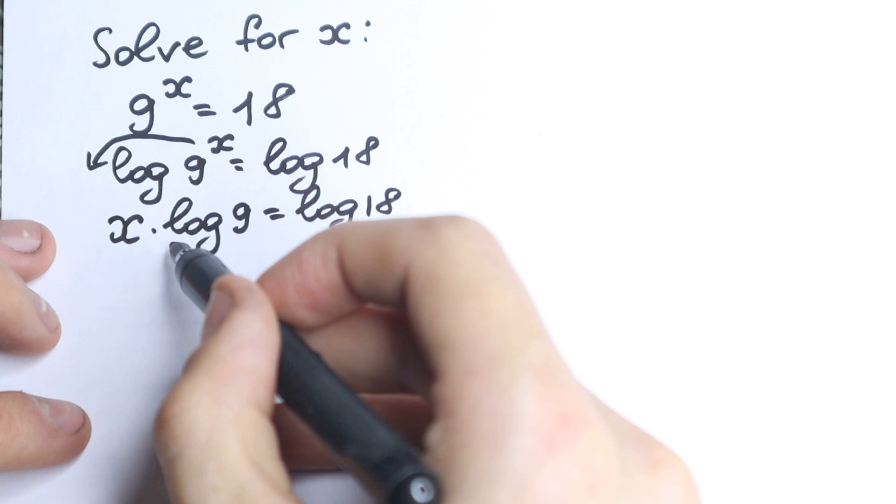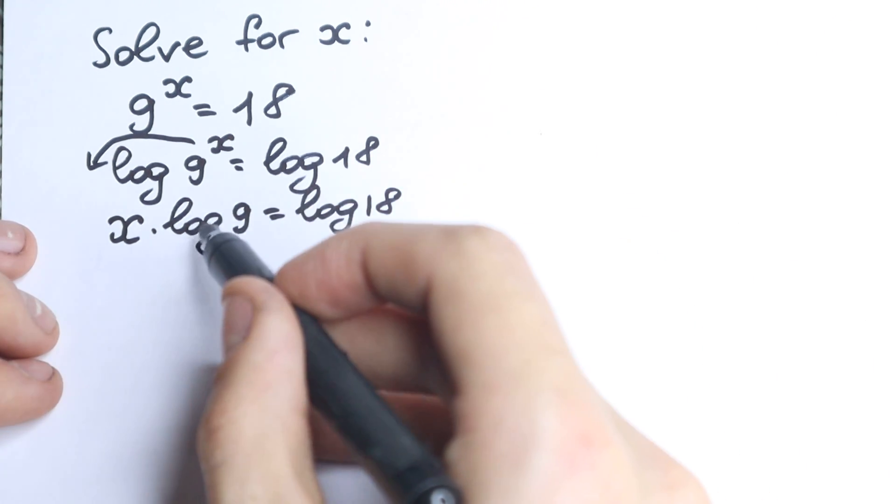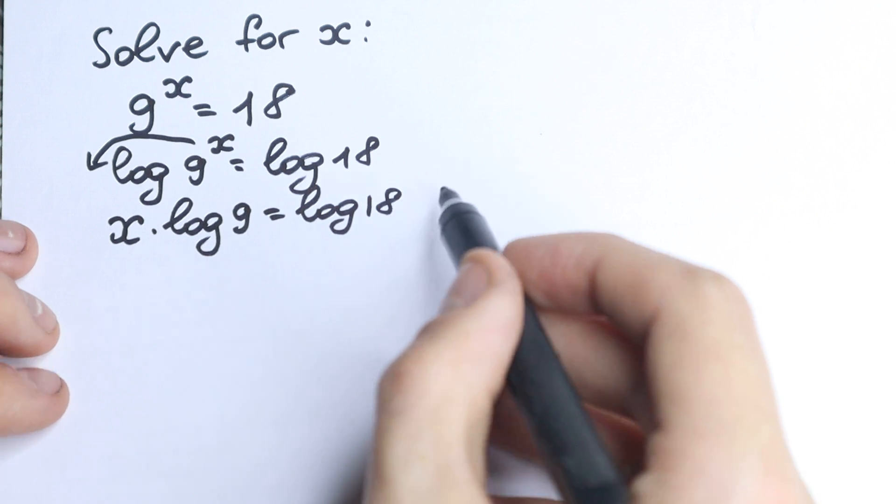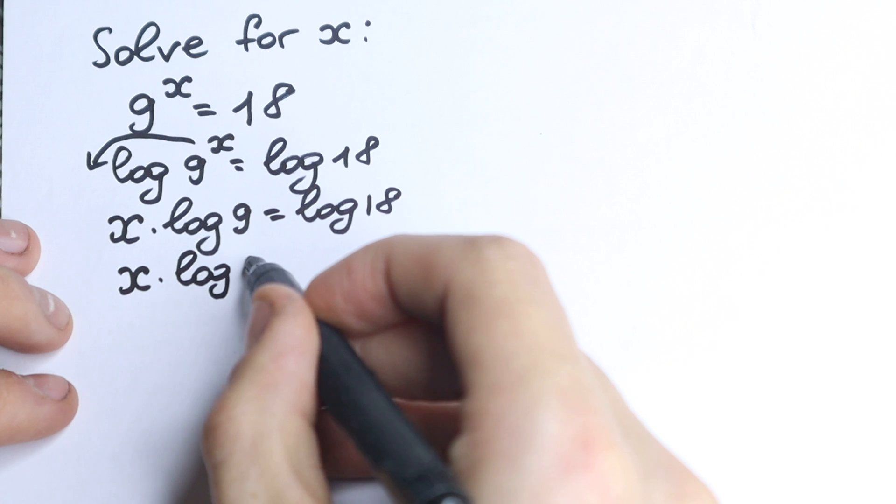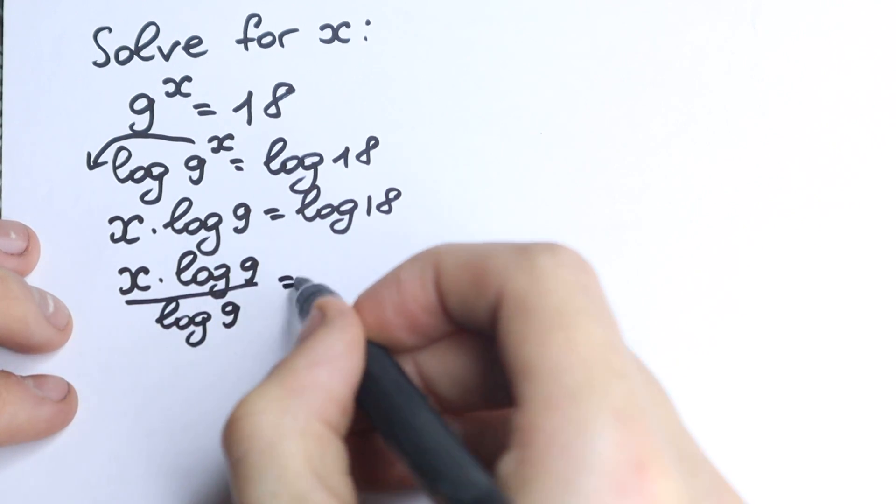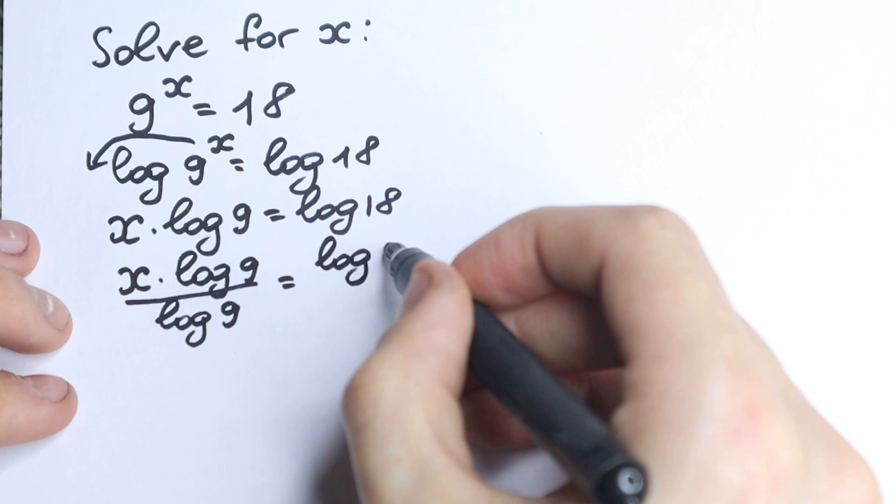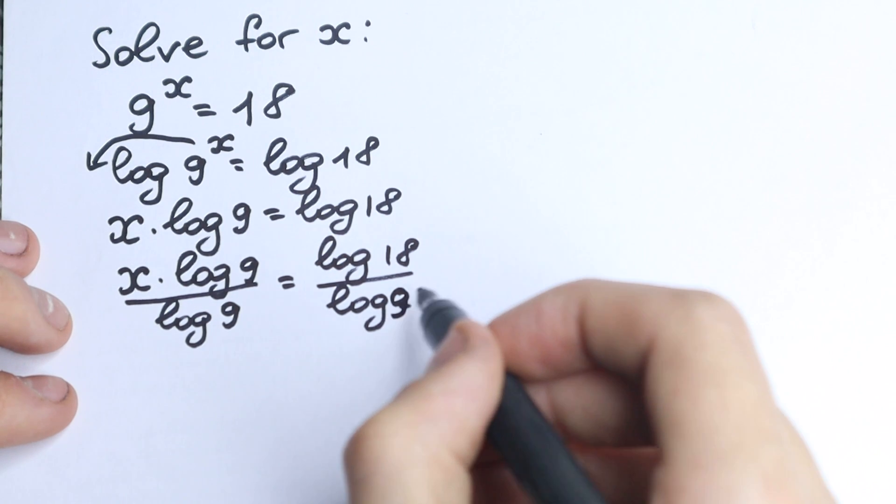Because then we can easily cancel log(9) on the left hand side, and we have a denominator here. So we have x · log(9) divided by log(9). And on the right hand side, we have log(18) over log(9).